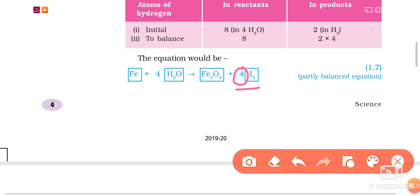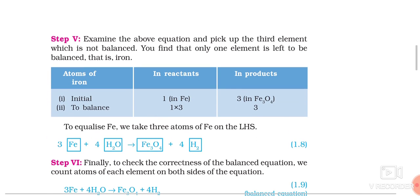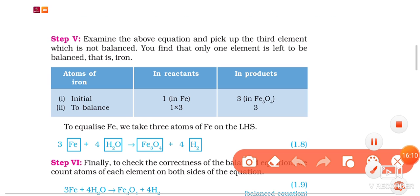We verify: on the left hand side it becomes 4×2 = 8 hydrogen atoms, and on the right hand side also 4×2 = 8 hydrogen atoms. The number of hydrogen atoms on both sides has been equalized. Now only iron remains: on the left hand side there is 1 iron atom, but on the right hand side there are 3 iron atoms in Fe3O4. In step 5, we put coefficient 3 before iron, giving 3 iron atoms on the left hand side to match 3 iron atoms on the right hand side.